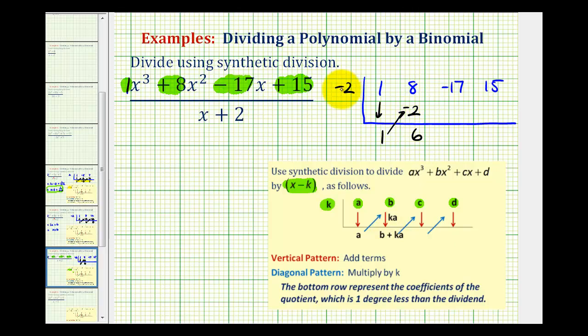Next, multiply 6 by negative 2 to get negative 12 in the next column. Then add to get negative 29. Multiply negative 29 by negative 2 to get positive 58. Then add to get 73.